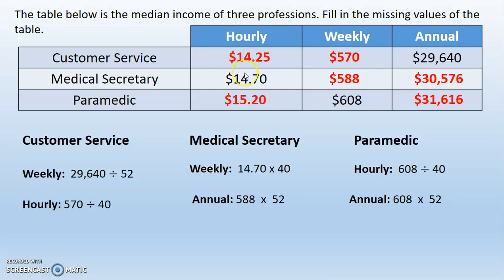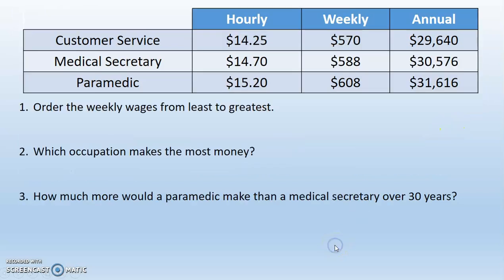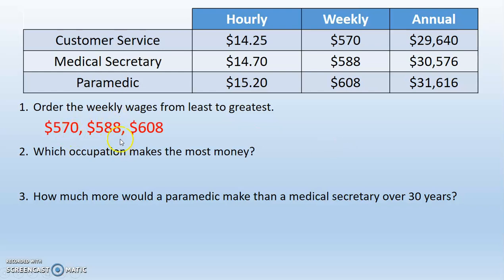Now what you can see is they're all in the same form: hourly wages, weekly wages, and annual salary. Now that they're all in the same form, we can compare. Order the weekly wages from least to greatest — smallest to largest. Looking at the weekly column, they're already ordered: $570, $588, and $608.